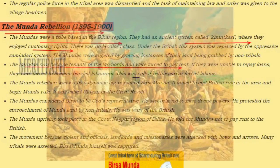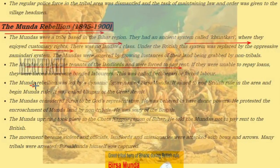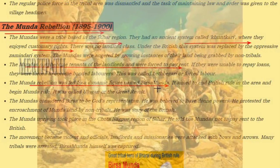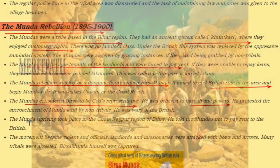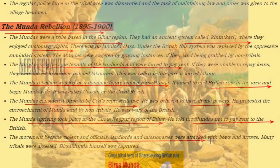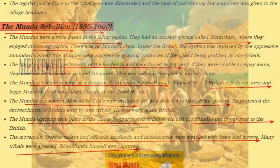The Mundas started a rebellion led by Birsa Munda, who aimed to end British rule and establish Munda self-rule. Birsa was even considered a divine representative by the Mundas, believed to have divine powers. The Munda uprising took place in the Chota Nagpur region of Bihar. He told the Mundas not to pay rent to the British. The movement became violent — official landlords and missionaries were attacked with bows and arrows, and many tribals were arrested. Birsa Munda himself was captured.